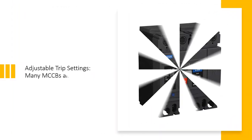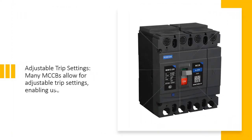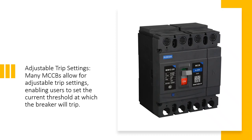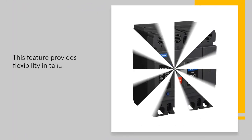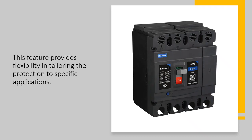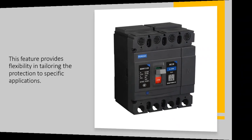3. Adjustable Trip Settings — many MCCBs allow for adjustable trip settings, enabling users to set the current threshold at which the breaker will trip. This feature provides flexibility in tailoring the protection to specific applications.